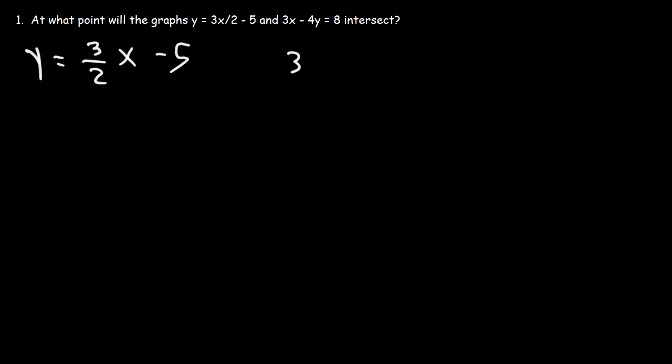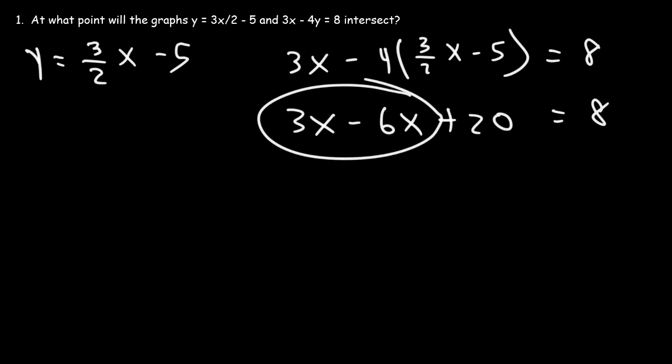So in the second equation, we're going to have 3x. But instead of 4y, it's going to be 4 times 3 over 2x minus 5 equals 8. So let's distribute the 4. What is negative 4 times 3 over 2? 4 times 3 is 12. 12 divided by 2 is 6. Now negative 4 times negative 5, that's positive 20. So now let's combine like terms. 3x minus 6x is negative 3x.